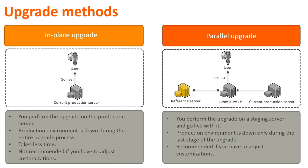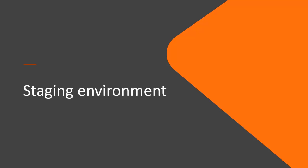BMC recommends that you use the parallel upgrade method when you want to upgrade the entire suite. In a parallel upgrade, you perform the upgrade on a staging server, which then becomes your new production server. Due to this, the downtime is limited only to the last phase of the upgrade, where you initiate the cutover. Parallel upgrade is ideal if you want to adjust and retain your customizations. Also, if you are upgrading from a version earlier than 7.6.04, you must perform the parallel upgrade.